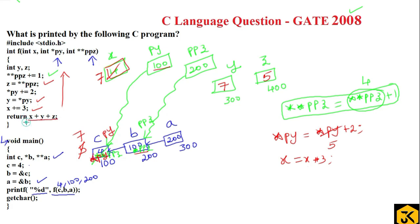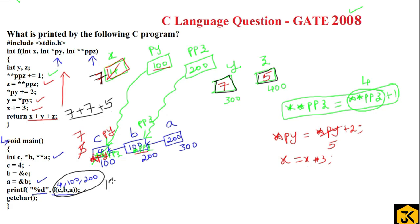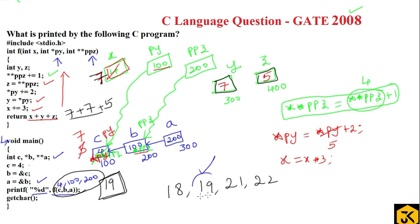Finally, the function returns x + y + z. The value of x is 7, the value of y is 7, and the value of z is 5. So 7 + 7 = 14, and 14 + 5 = 19. That 19 is returned to the calling function and printed. The options were 18, 19, 21, and 22, so the correct answer is 19.